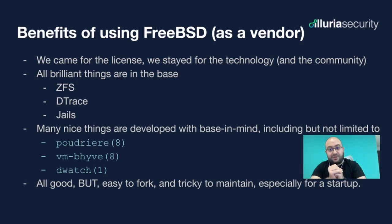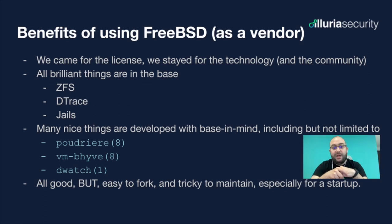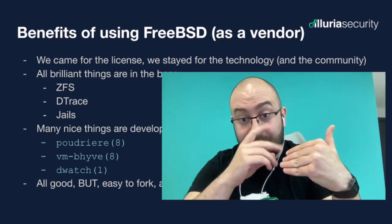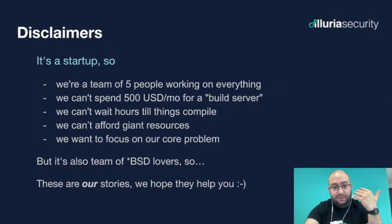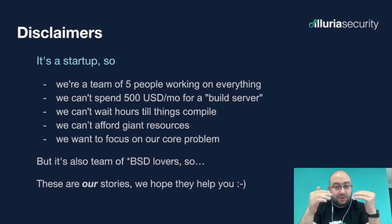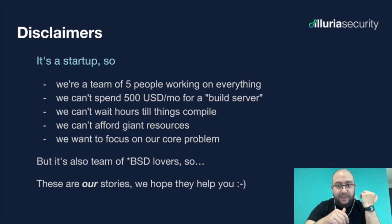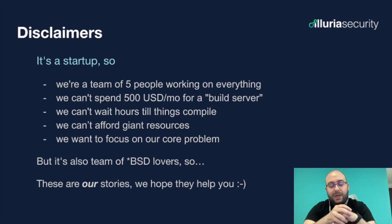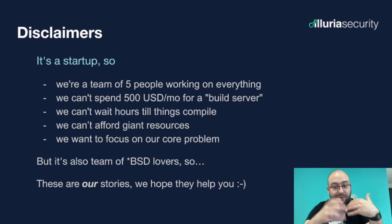Amazing things are built into the base system itself, such as ZFS, DTrace, Jails, and many more. Many nice things are developed with the base in mind, such as Poudriere, VMBeehive, and Dewatch. It's easy to fork, however a little tricky to maintain, especially for a startup. Speaking of which, here are a couple of disclaimers: we're a team of five people working on everything. We can't just spend $500 a month on a build server, can't wait hours until things compile — I'm looking at LLVM in base — can't afford giant resources, and we want to focus on our core problem. But we're also a team of BSD lovers.